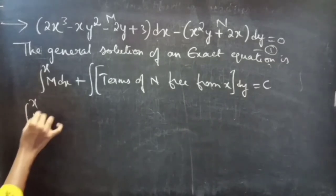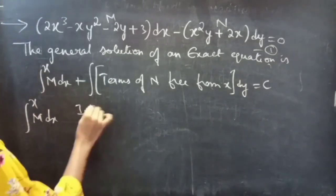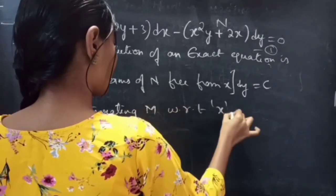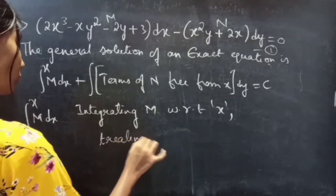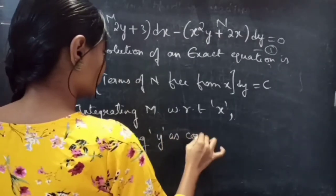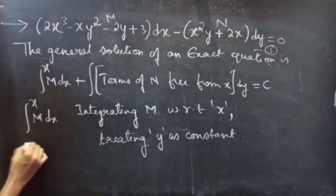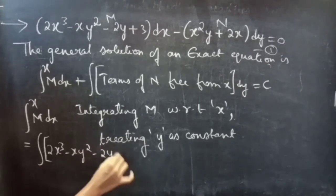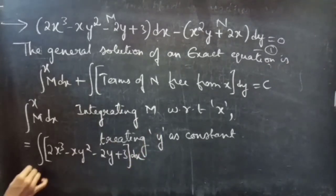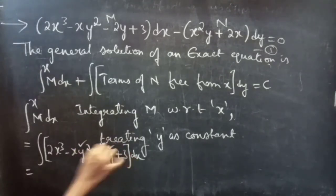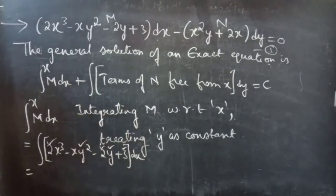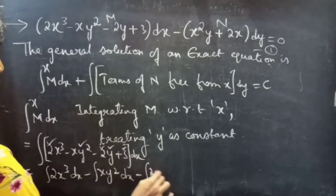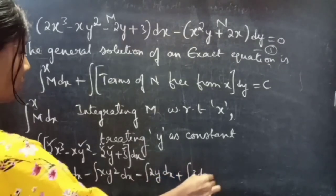First we consider ∫M dx, where we integrate M with respect to x treating y as constant. This equals ∫(2x³ - xy² - 2y + 3) dx = ∫2x³ dx - ∫xy² dx - ∫2y dx + ∫3 dx. Taking constants outside: 2∫x³ dx - y²∫x dx - 2y∫dx + 3∫dx.